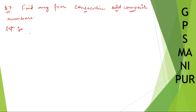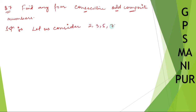Let us try doing this question. We need to consider prime numbers. Consider primes like two, three, five, and seven. You can check whether taking five works — try to find four consecutive odd composite numbers with that, and if you cannot, then take this set.